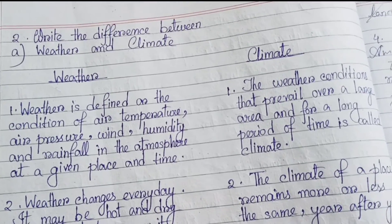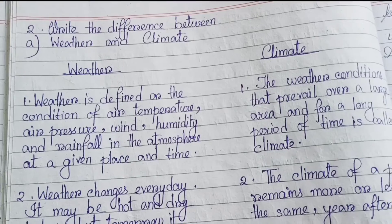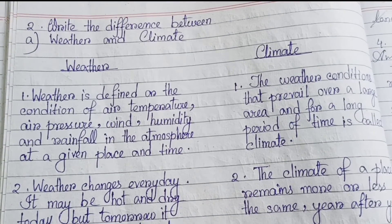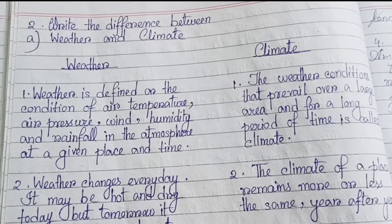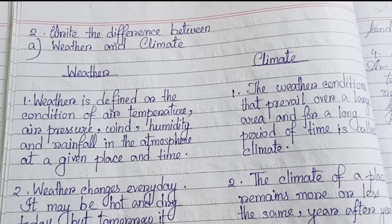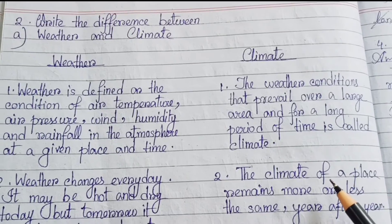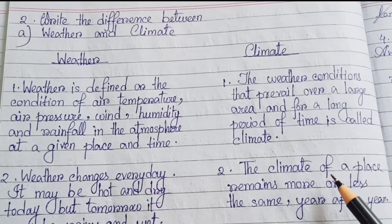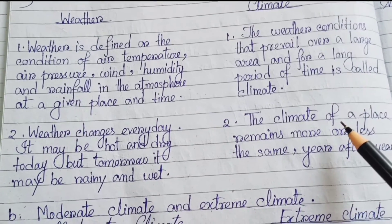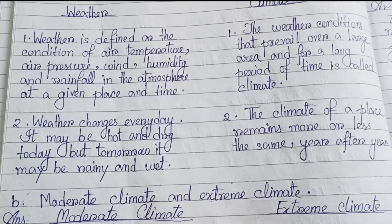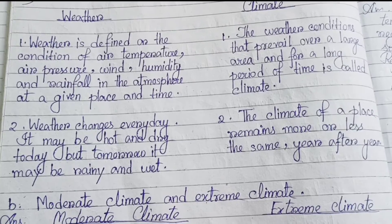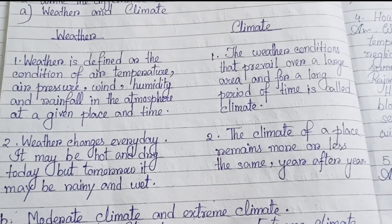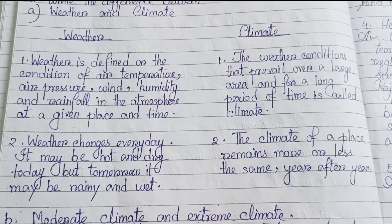Number two: Write the differences between (a) weather and climate. Weather is defined as the condition of air temperature, air pressure, wind, humidity, and rainfall in the atmosphere at a given place and time. Climate: the weather conditions that prevail over a large area and for a long period of time is called climate. Weather changes every day — it may be hot and dry today but tomorrow it may be rainy and wet. The climate of a place remains more or less the same year after year.